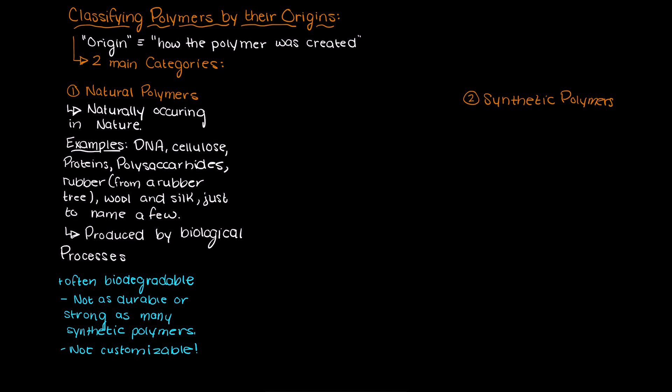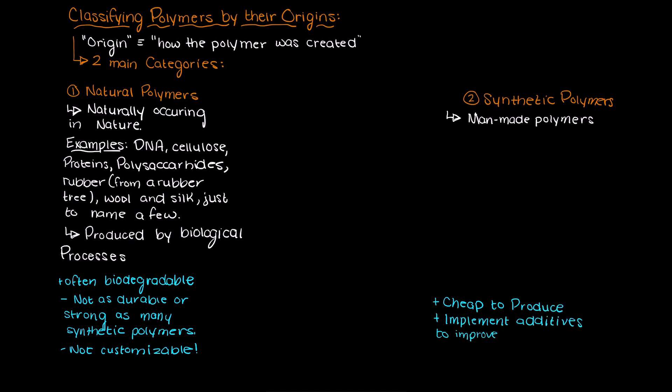Now let's move on to what synthetic polymers are. Synthetic polymers are man-made polymers. They are widely used as they are often cheap to produce and we can implement various additives to achieve the properties that we want.